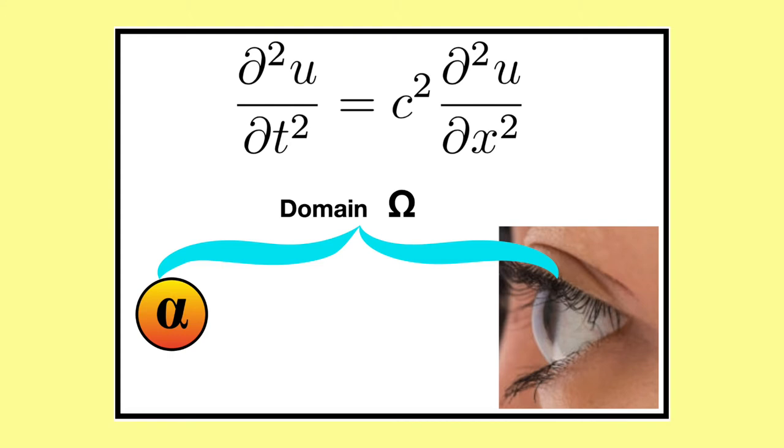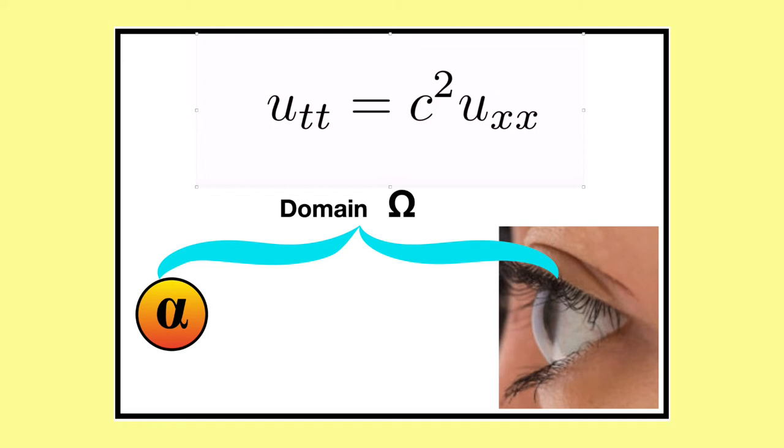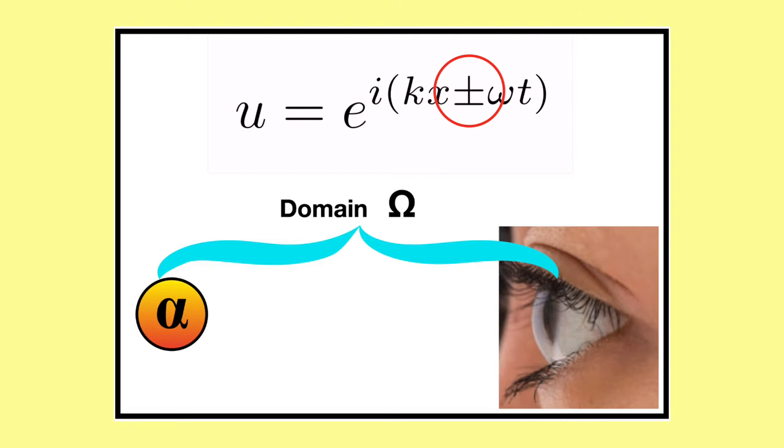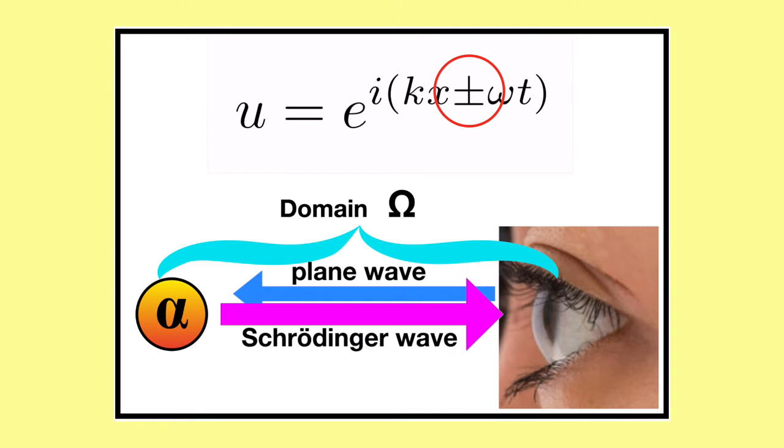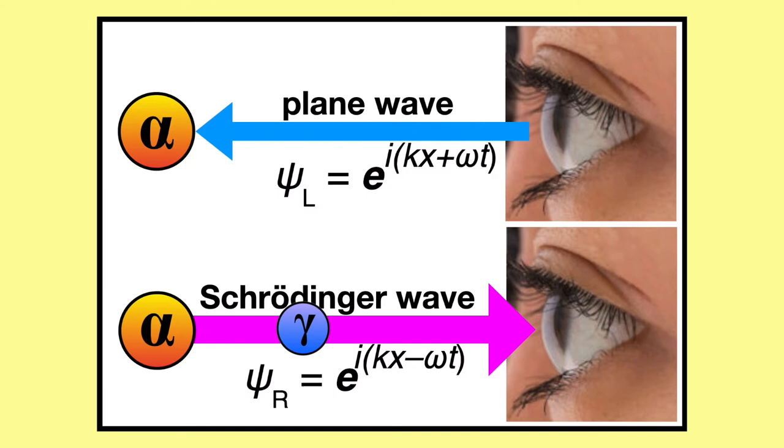We define one-dimensional domain omega to go from alpha to your eye. The well-known wave equation is defined over that domain. Here is a simpler way to write the same partial differential equation. It is easy to show that u equals e to the i(kx ± ωt) is a solution. We will use both solutions. If the plus-minus is plus, then the wave is traveling to the left. If it's minus, then it's traveling to the right. Our primary interest is not on the differential equation, but rather on the boundary condition at point alpha.